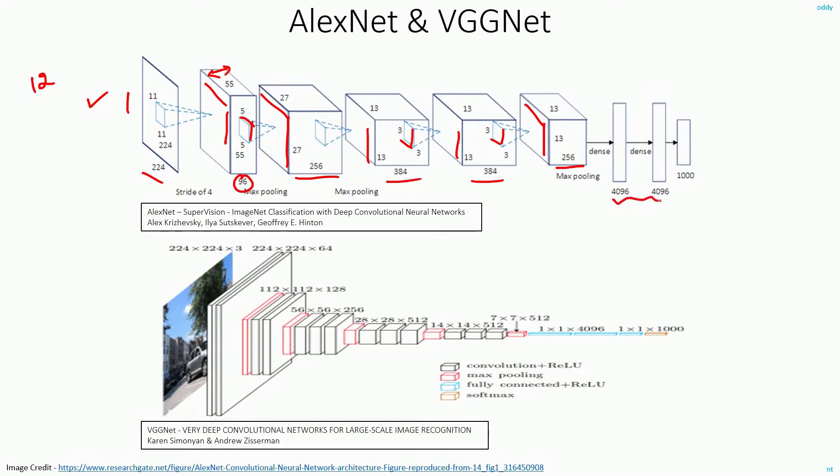And these are the fully connected layers. Sometimes it's also called as dense layers. The first layer of fully connected was of size 4096. Even the second layer had the same size. And the final layer had the size of 1000. That's because the number of classes in your ImageNet is 1000.